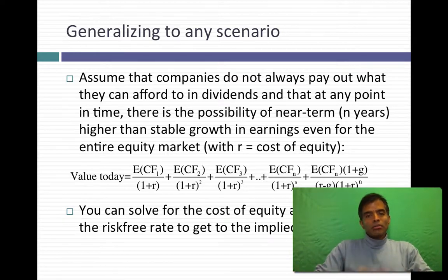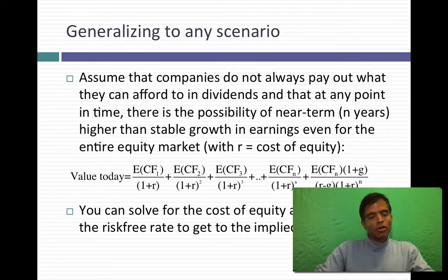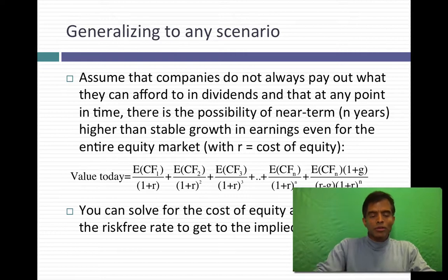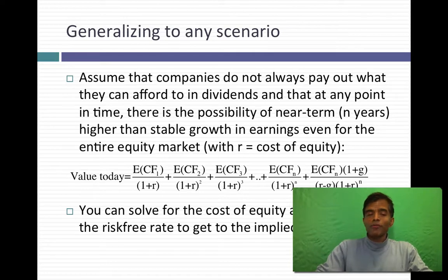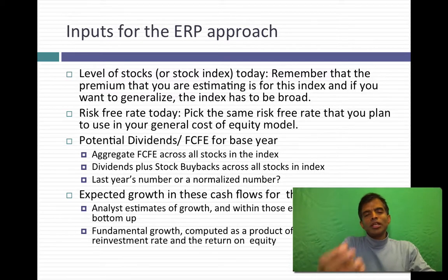Generalizing to any scenario: write the value of equity as a function of expected cash flows from that equity investment into the future — a general discounted cash flow model. You observe the price today, you estimate expected future cash flows and the growth rate. The only unknown in this equation is the discount rate, so you solve for it — it's like solving for an internal rate of return. That becomes your cost of equity, and subtracting the risk-free rate gives you an implied equity risk premium. Rather than continue with theory, let's go to a spreadsheet and actually estimate the equity risk premium for the S&P 500.